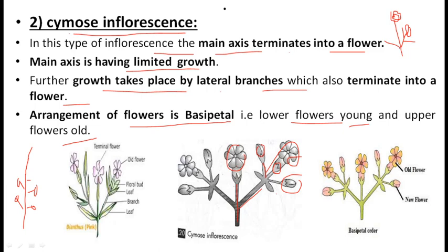To summarize cymose inflorescence: the main peduncle terminates into a flower and has limited growth; further growth is by lateral branches which also terminate into flowers. The arrangement of flowers is basipetal — younger flowers towards the base and older towards the top — opposite to acropetal where younger flowers are towards the apex and older towards the base. This kind of inflorescence is called cymose inflorescence.